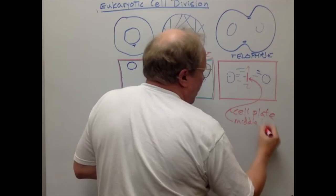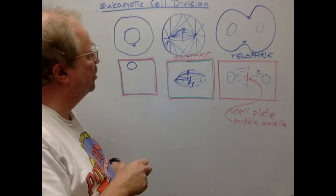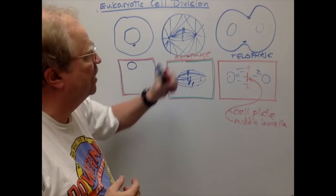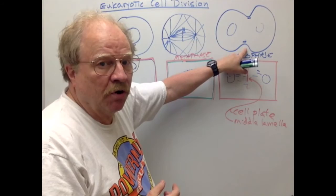So those are three major differences in mitosis in plants versus animals: the absence of centrioles, the absence of astral rays, and the way cytokinesis occurs — by a cleavage furrow in animal cells, but by formation of a cell plate or middle lamella in plant cells.